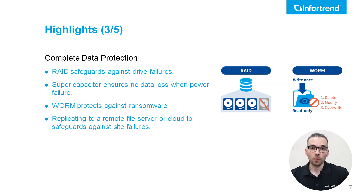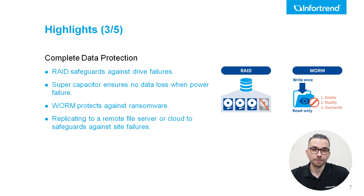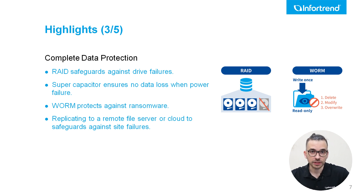Next, we will explore how our systems are designed with comprehensive features to safeguard your data against various threats and ensure its integrity and availability. RAID is a fundamental feature to safeguard against drive failures by distributing data across multiple drives. In the event of a drive failure, RAID ensures that the data remains accessible and that no data is lost, providing an additional layer of redundancy and reliability.